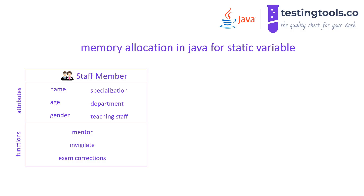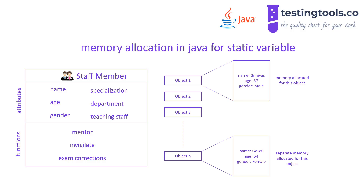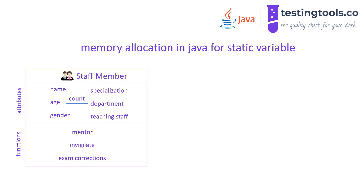We have seen how a regular data member is treated with respect to memory allocation. Now we will look at variables declared as static. To understand how a static variable works, I am introducing a new variable called count. Unlike regular data members, for static data members the memory is allocated one time when the class is created, and it will also have the default value assigned to it.